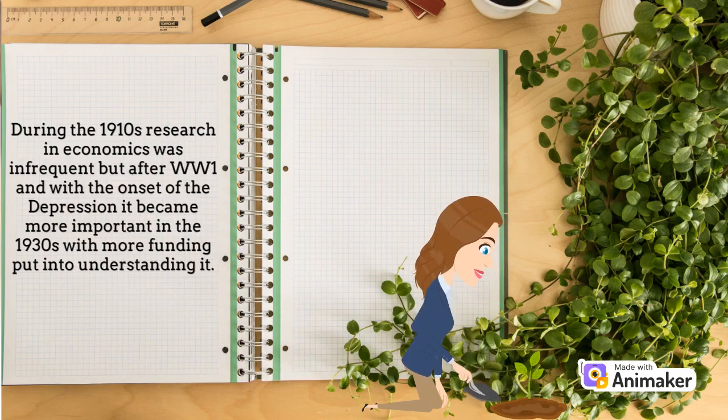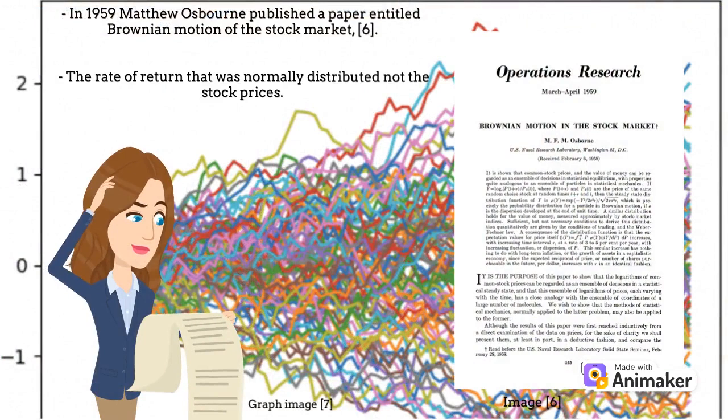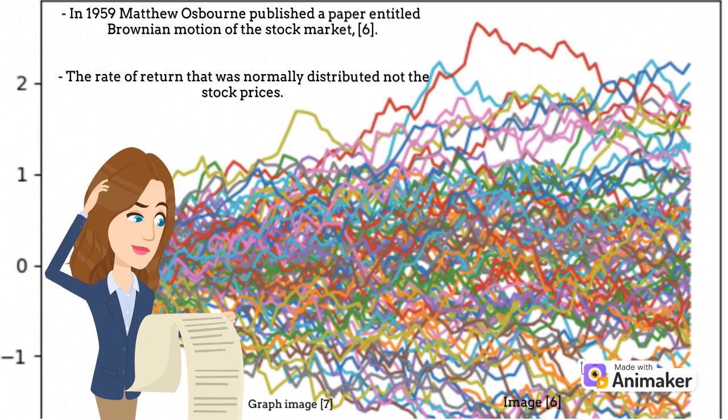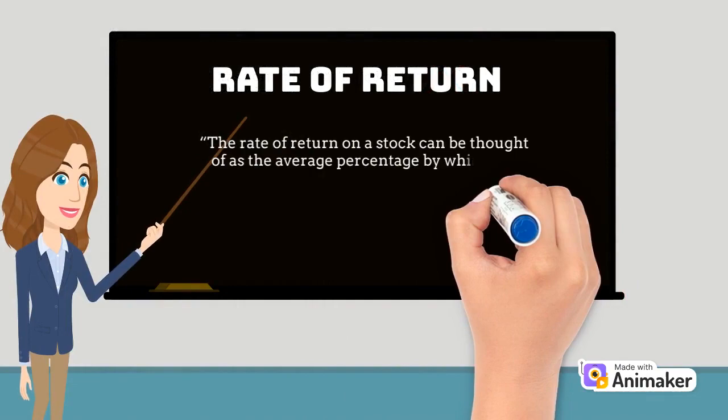In 1959, Matthew Osborne published a paper entitled Brownian Motion of the Stock Market. He improved on Bachelier's ideas by realizing it was the rate of return that was normally distributed, not the stock prices. The rate of return on a stock can be thought of as the average percentage by which the price changes each instant.